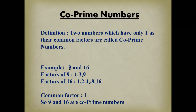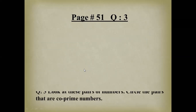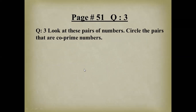So in this example, we write the factors of both numbers and check that the only common factor is one, then we say these numbers are co-prime numbers. Now please open your books to page number 51 and keep your pencils with you. The question says: look at the pairs of numbers and circle the pairs that are co-prime numbers. This is in-class work.